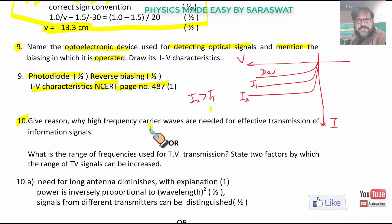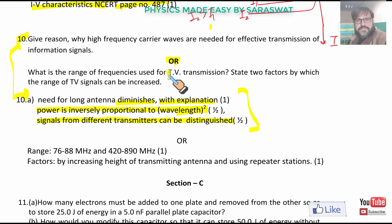Give reason why high frequency carrier waves are needed for effective transmission of information signals. The answer is: need for long antenna diminishes with explanation. Second, power is inversely proportional to wavelength square. Third, signals from different transmitters can be distinguished, that is no mixing up of channels. In OR, what is the range of frequencies used for TV transmission? The range is 76 to 88 MHz and 420 to 890 MHz. Factors are by increasing the height of transmitting antenna and using repeater stations.